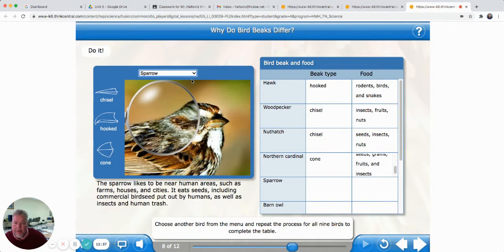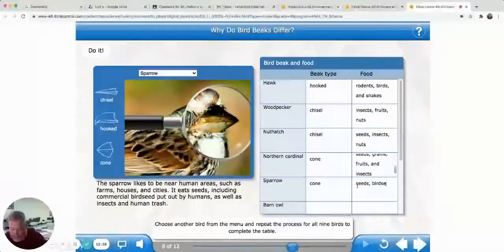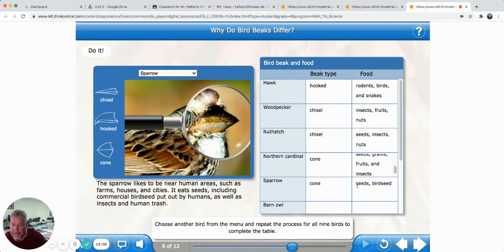That's the first cone bill we had. Now, let's look at the sparrow. That's a cone-shaped bill too, isn't it? All right. Cone. The sparrow likes to be near human areas, such as farms, houses, and cities. It eats seeds, including commercial bird seed, put out by humans as well as insects and human trash. What? You better not leave trash out. It might hurt the bird.